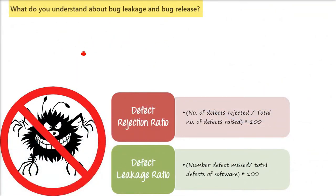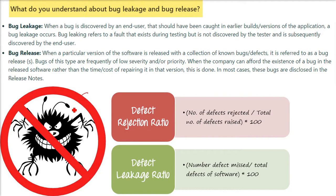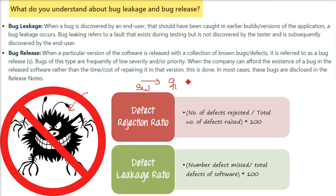What do you understand by bug leakage and bug release? Bug leakage is when a bug is discovered by the end user, stakeholder, or customer that should have been caught in earlier builds or versions of the application. The bug wasn't found by the testing team — the customer found it instead. So the bug has leaked from your end to the user.